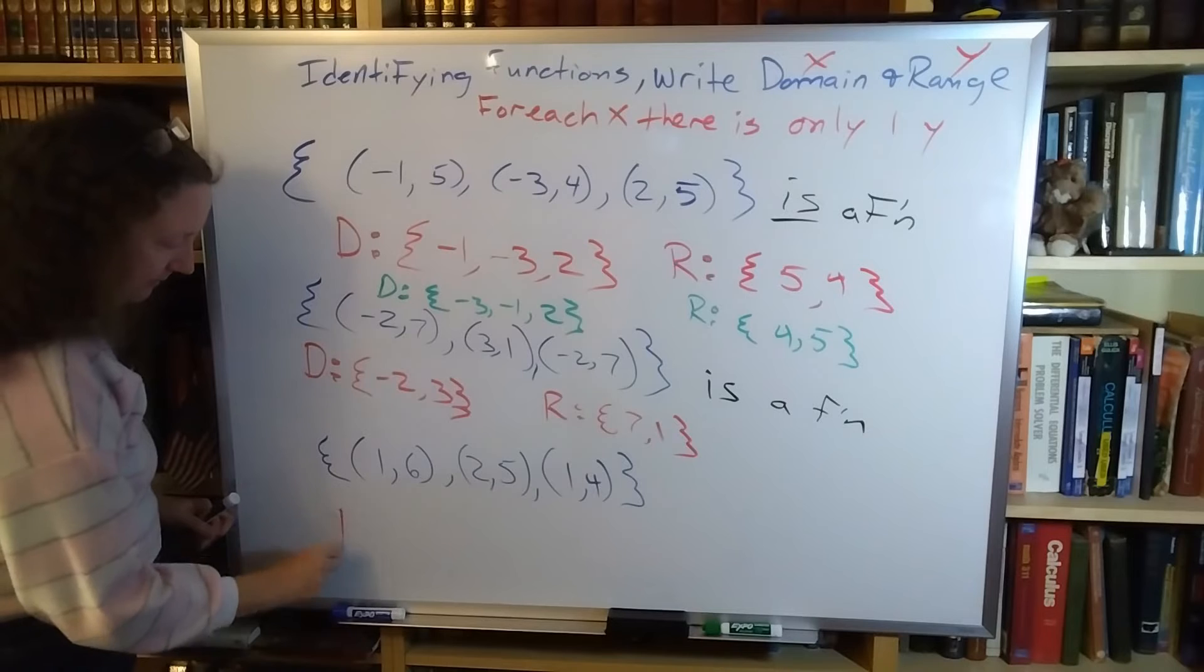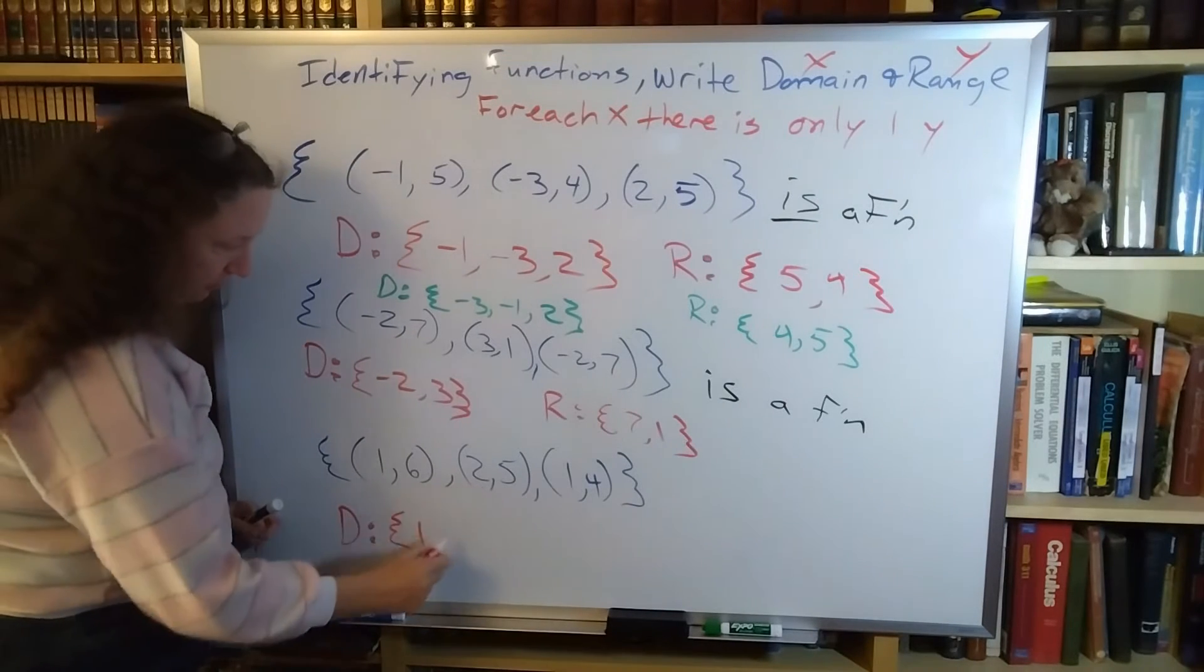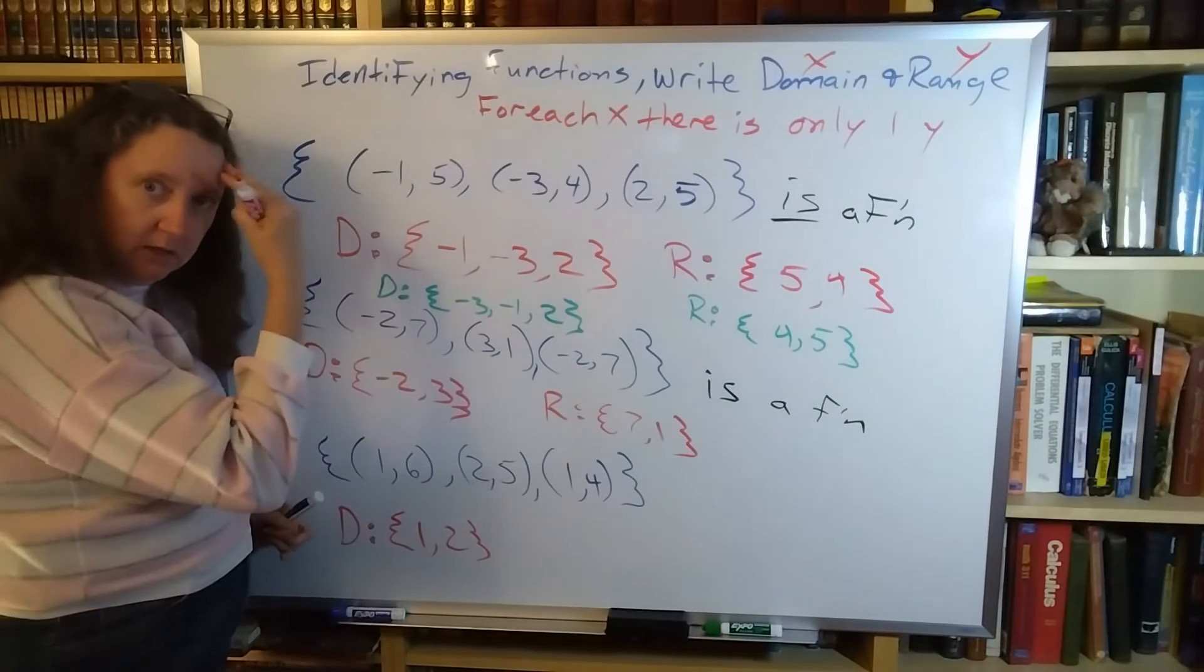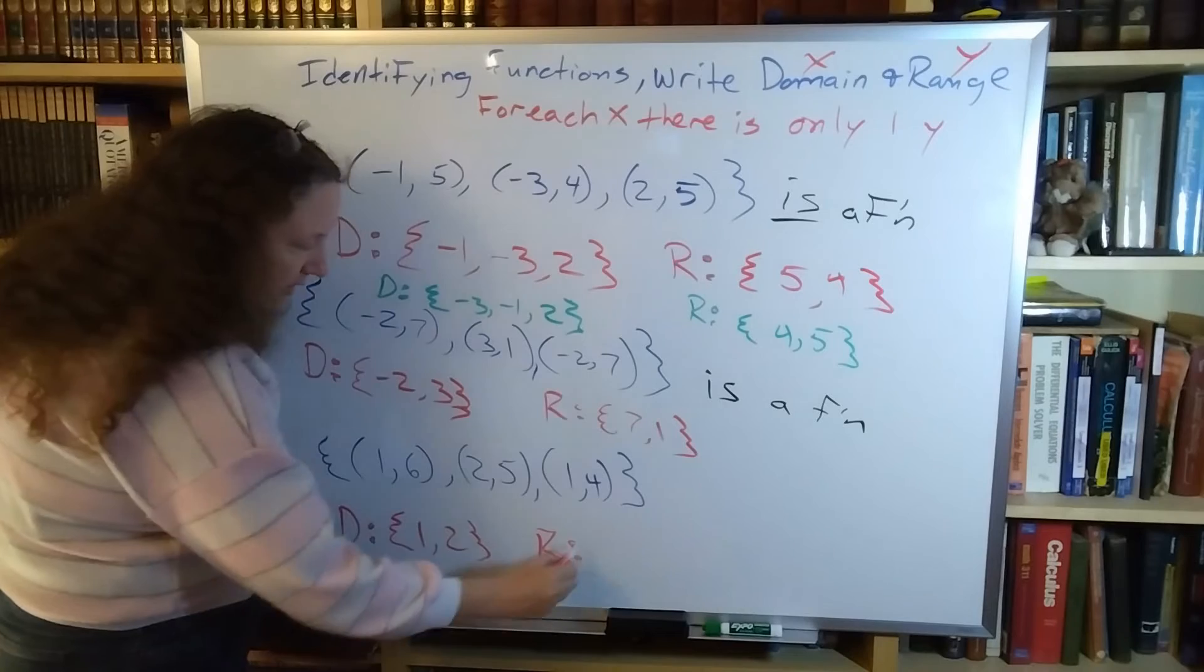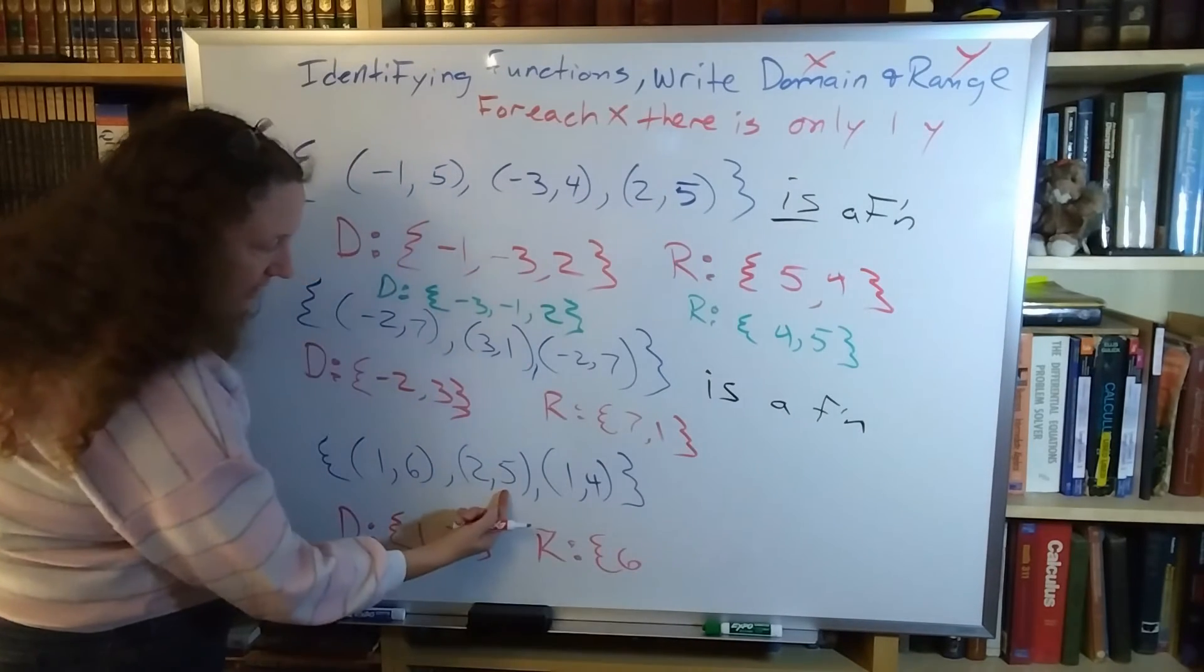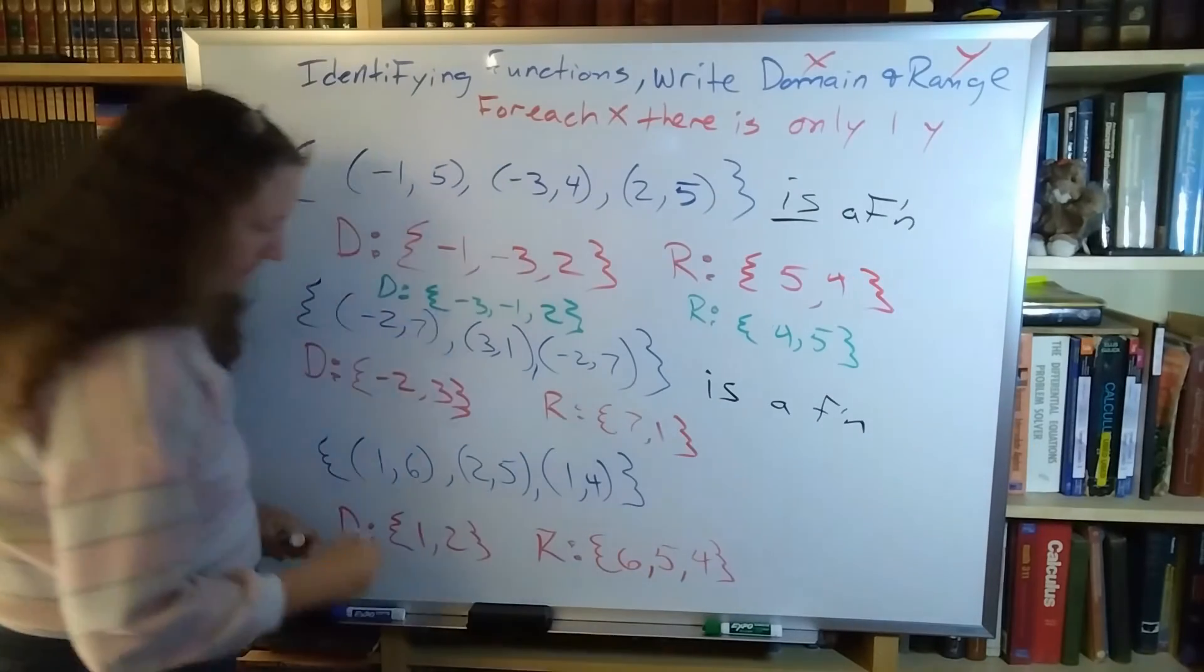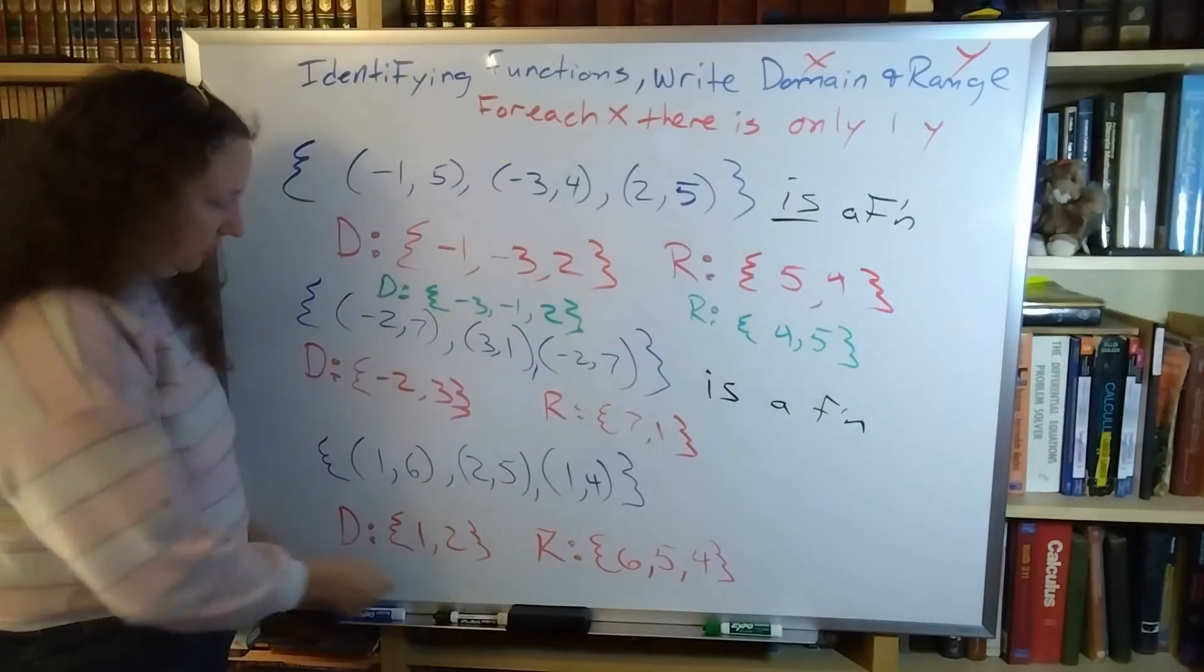My domain is the set of numbers {1, 2}, and again I have a 1, so I have a repeat in there - I have to hold that in my mind. My range is the set of numbers {6, 5, 4}.